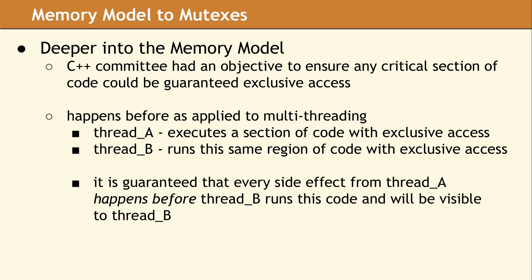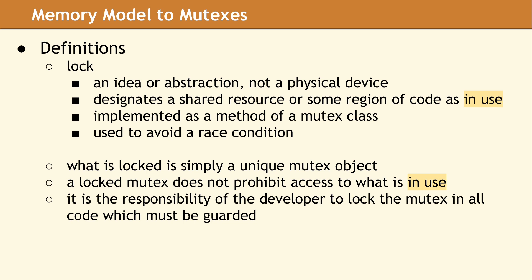Using a mutex to assure exclusive access to code is more restrictive than the atomic operations we discussed in our previous video. Atomics can only guarantee that a single memory operation is not interleaved with another thread doing a read or write on the same data. A lock is an abstraction which designates that a shared resource or some region of code can only be run by one thread at a time. While this thread is running the code, it has exclusive access and the code is considered in use. Every other thread must wait their turn to run this code, and each time it is run, the given thread will have exclusive access. In C++, locks are implemented as a method of a mutex class. Keep in mind, the purpose of doing this is to avoid a race condition, which according to the C++ standard can produce undefined behavior.